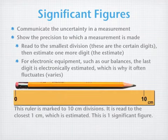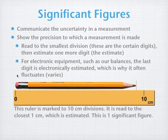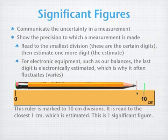Let's take a look at what I mean by looking at this ruler measuring the length of a pencil. This first ruler is marked to 10-centimeter divisions, which means it reads to 10 centimeters. Because of that, we have to estimate to the ones place as the last significant figure. We can see that the pencil is between 0 and 10 centimeters — that's the best we can say for certain. We estimate that last significant figure as 9, so 9 centimeters becomes our reported measurement — a single significant digit.